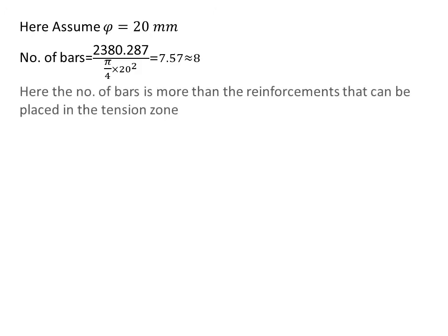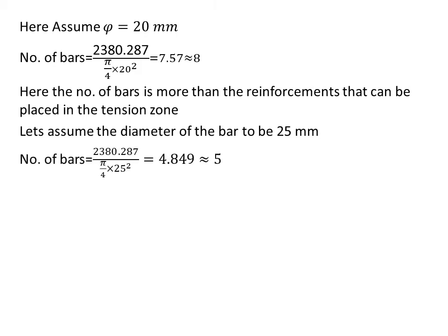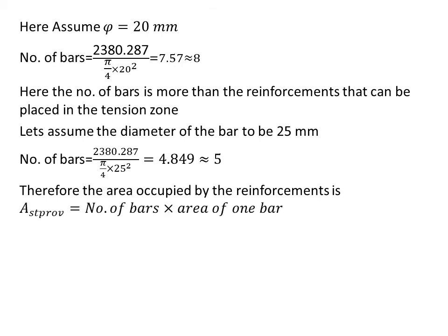We will assume a diameter of 20 mm. After we find the required area, we have to find the area provided. The number of bars is Ast required divided by area of one bar, which we get as 8. Usually the number of reinforcement has to be at most 6. So here the number of bars is more than can be placed in the tension zone. Let's assume the diameter to be 25 mm. The number of bars we get is 4.849, that means we get 5. Now we can find out the area provided. Ast provided equals 5 × π/4 × 25² and we get 2454.36 mm², which is greater than Ast required. Hence it is safe.